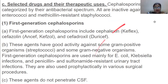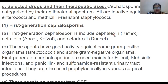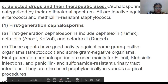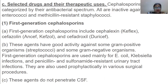Looking at cephalosporins in more detail — selective drugs and therapeutic uses. Cephalosporins are categorized by their antibacterial spectrum and are inactive against enterococci and MRSA (methicillin-resistant staphylococci). First generation cephalosporins include cephalexin, cefazolin, and cephalothin. These agents have good activity against gram-positive organisms and some gram-negative organisms.